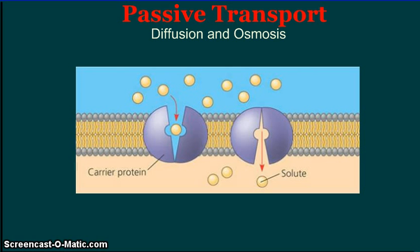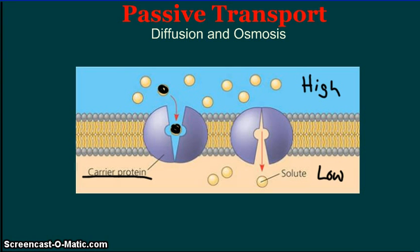Sometimes passive transport involves a protein that is designed to carry a specific molecule. In this case, the molecule fits into a carrier protein that is embedded in the membrane. The molecule is moving from high concentration to low concentration, and even though the carrier protein is changing shape and moving, this again does not require energy.